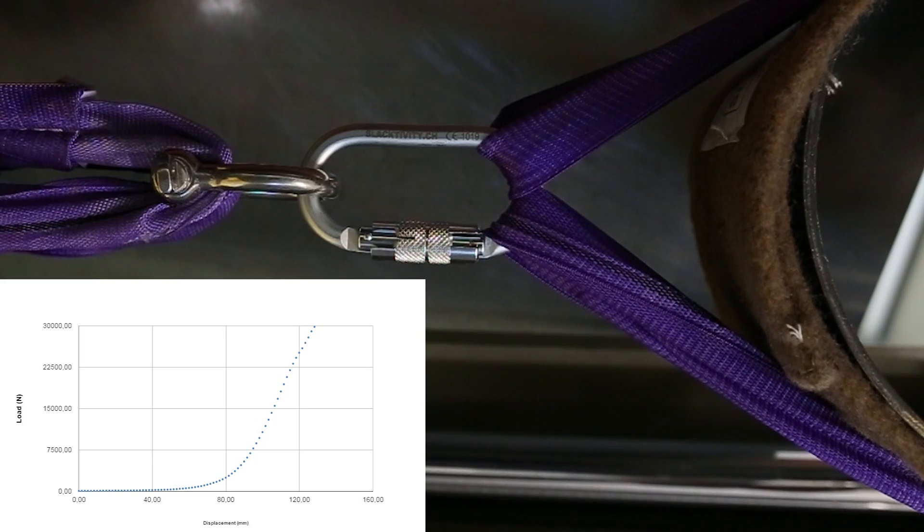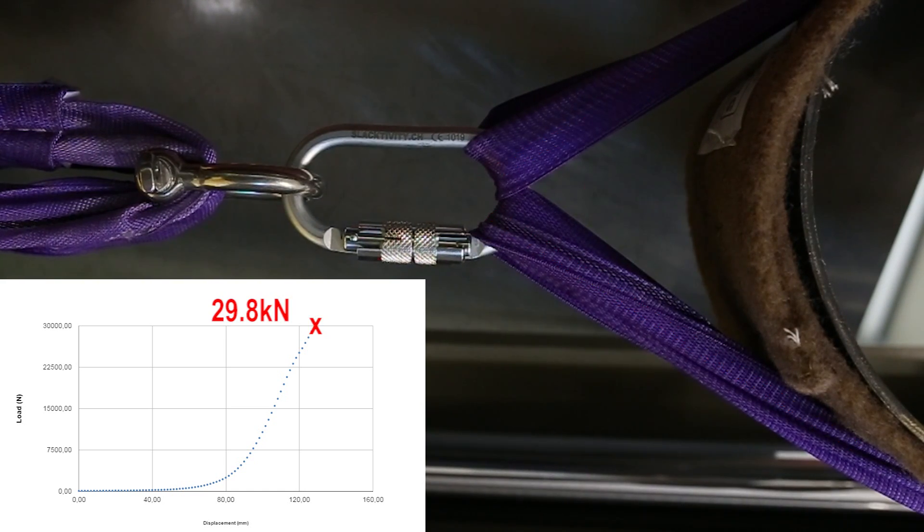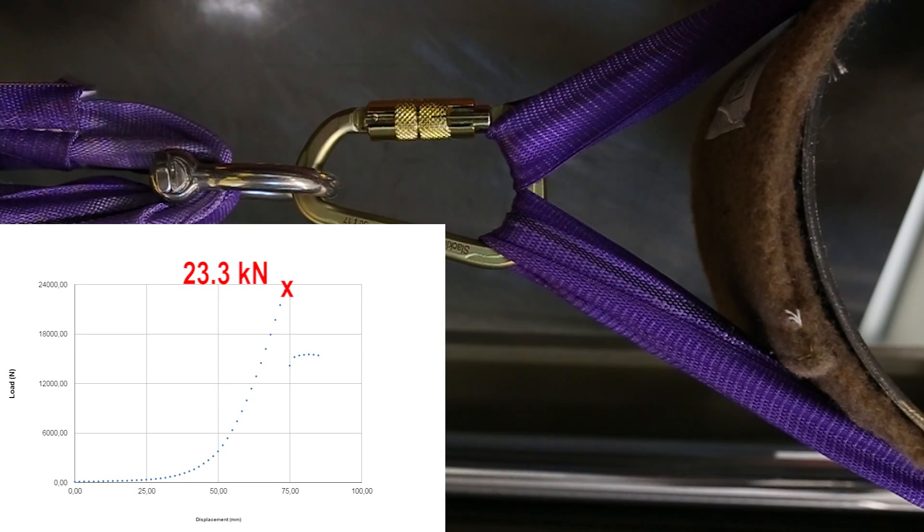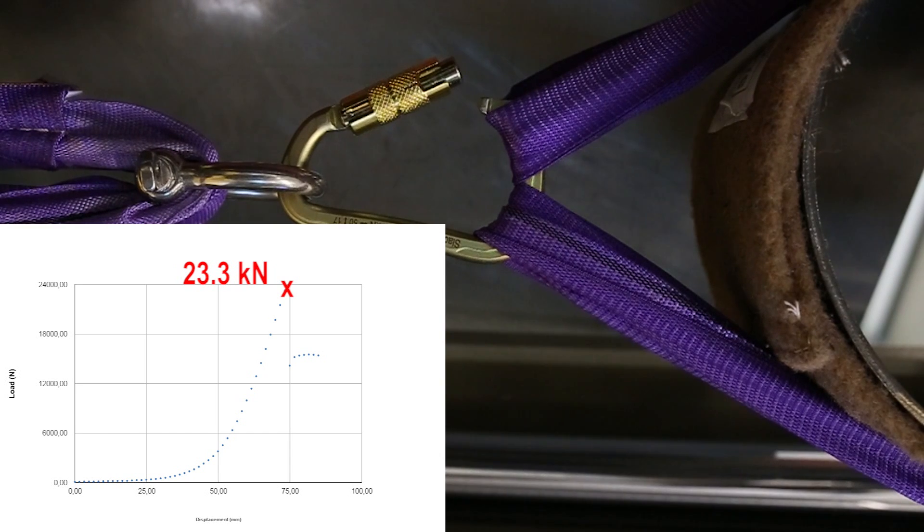So it was time to go even a bit more extreme and increase the angle to about 55 degrees. The oval-shaped carabiner was still not affected, but the pear-shaped carabiner even more weakened and now breaking at 23 kN.